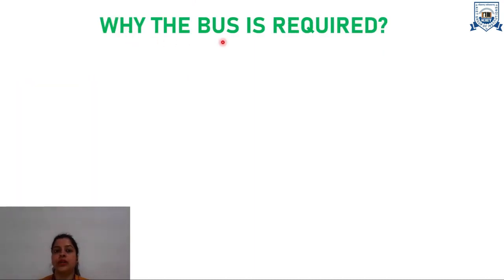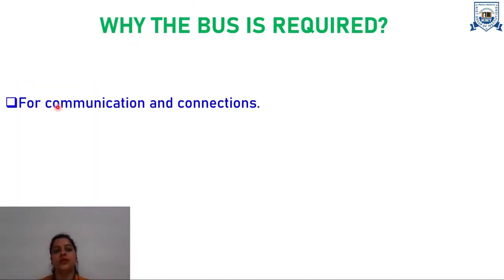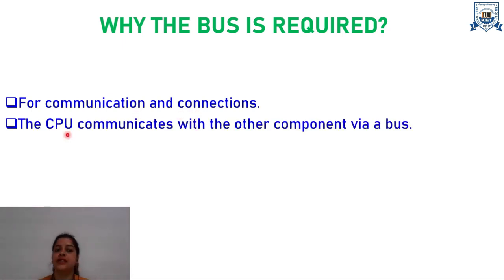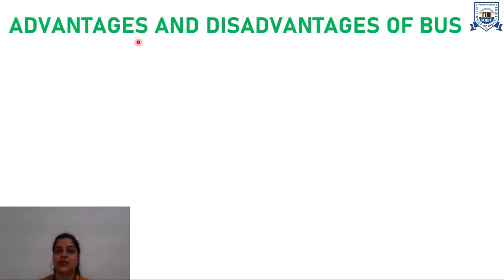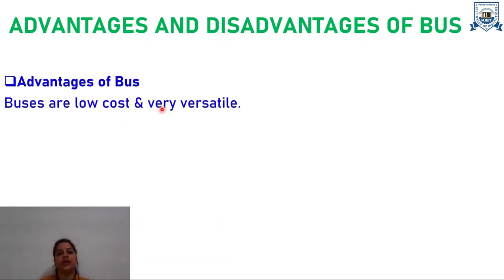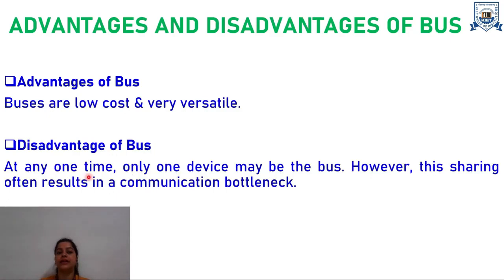It must be clear now why we require a bus. A bus is required for effective communication and to establish connections between the subcomponents of the computer system. The CPU can effectively communicate with other components with the help of the bus, and it also makes it easy to connect new devices. A common bus has the advantage of low cost and is very versatile, but its disadvantage is that only one device can use the bus at a time, which often results in a communication bottleneck — a point where the flow of data is entirely stopped.